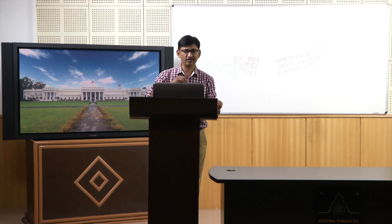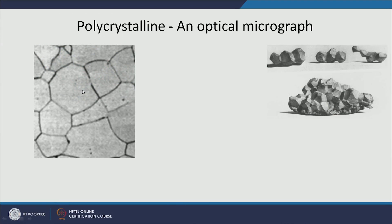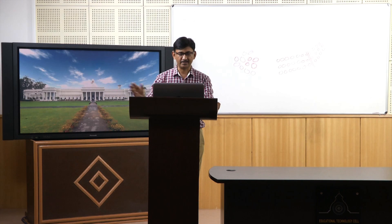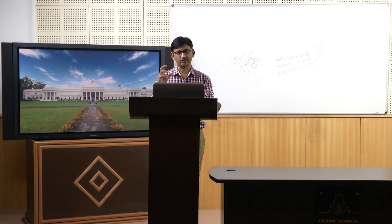In a single phase material you will see a bright feature which is a single grain, and between two grains there will be a grain boundary. Some materials may not have only one phase — they may have two or three phases. For example, this is a two-phase steel microstructure where ferrite is present. These names will be covered later — for now just accept that there are two phases. When you have two different phases, the phases may react with the etchant in different ways, and that can be captured through a microscope.